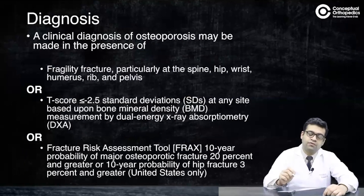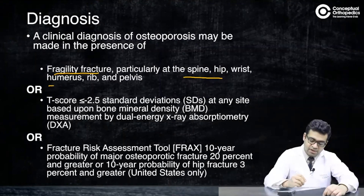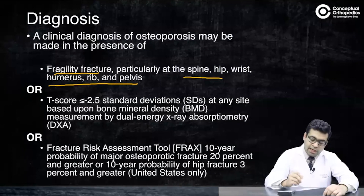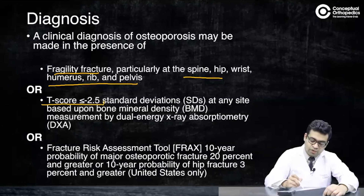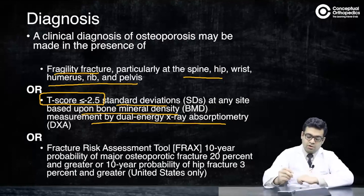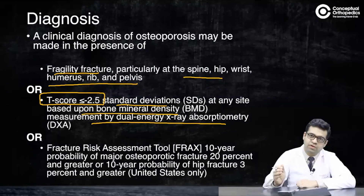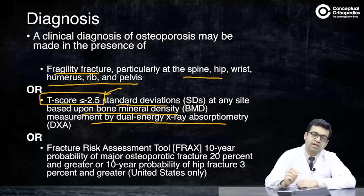How will you diagnose a case of osteoporosis? A clinical diagnosis can be made if there is a fragility fracture, particularly at the spine, hip, wrist, or other bones. Alternatively, you can do a bone mineral density test using a DEXA scan and find a T-score, which is given by dual energy X-ray absorptiometry testing. The T-score represents the standard deviation of the patient's BMD from that of a healthy young male or female at the age of 30.